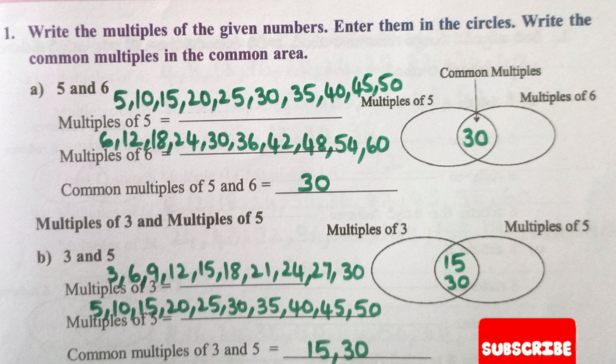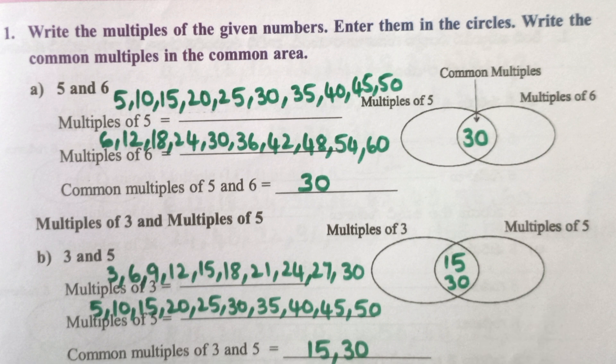Multiples of 3 and multiples of 5. Multiples of 3: 3, 6, 9, 12, 15, 18, 21, 24, 27, 30.